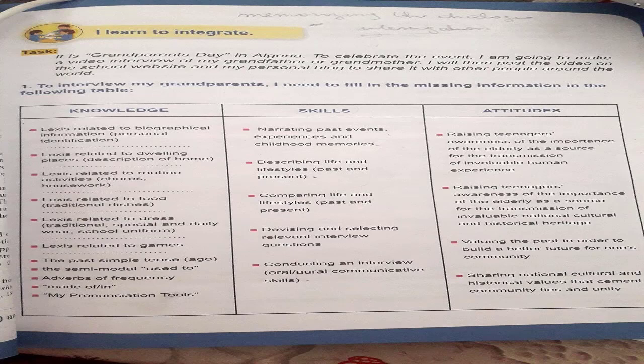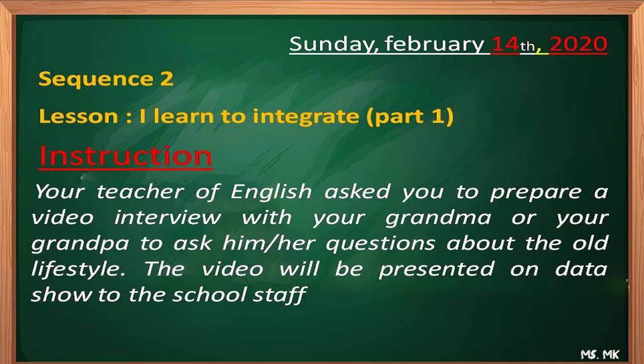After pre-writing, write the date on the board, then your sequence, the lesson title 'I Learn to Integrate,' and 'Part One' — because we still have Part Two and maybe Part Three. Then write the instruction on the board. Your pupils have already deduced the topic in the pre-writing phase, so now you write the instruction and ask pupils to copy it into their copy books. The instruction must be clear.